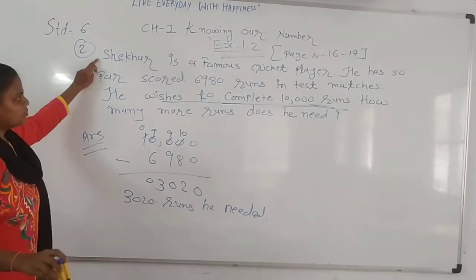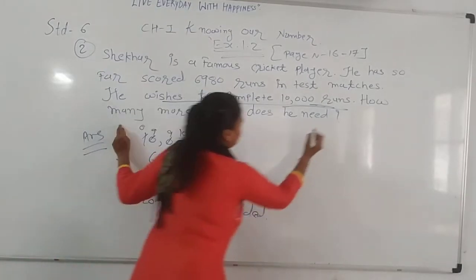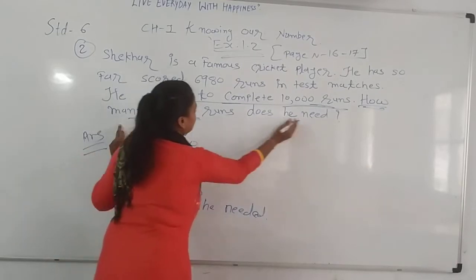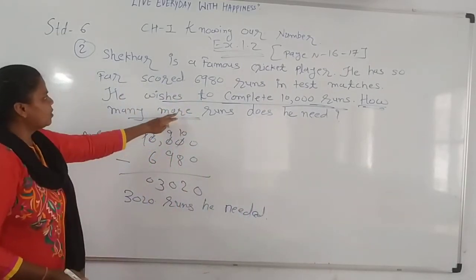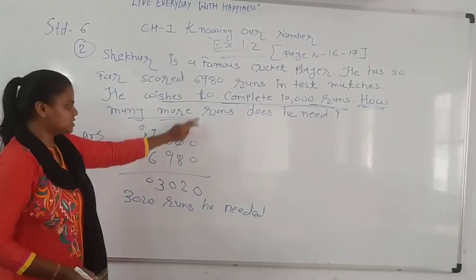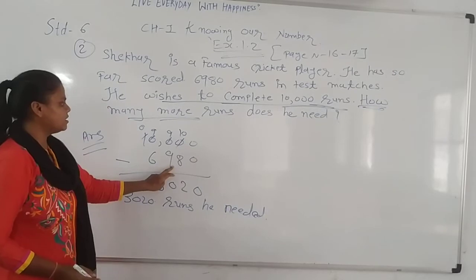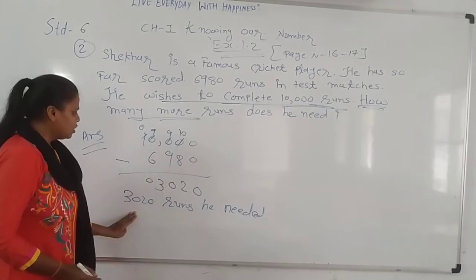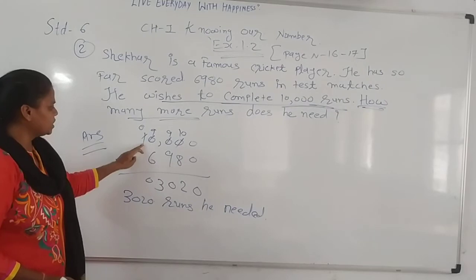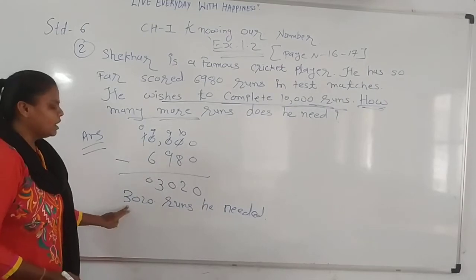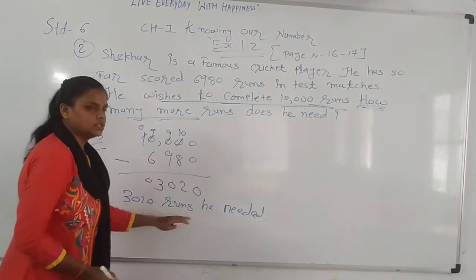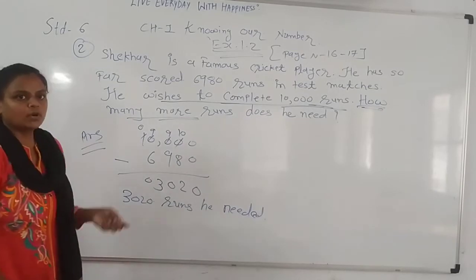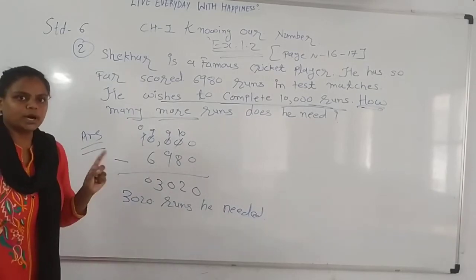And for the second sum, how many more runs does he need? We did 10,000 minus 6,980, and the answer is 3,020. That's correct. Okay, let's move on to the next sum.